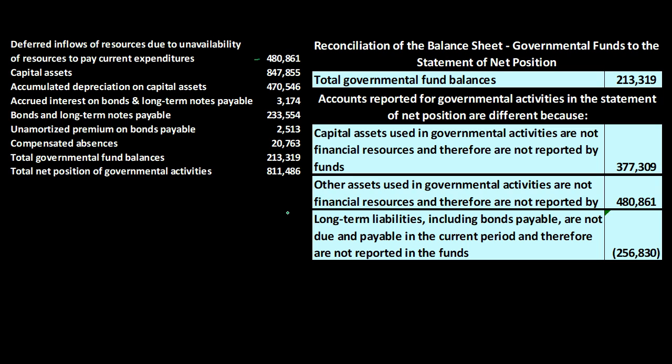Then we have: long-term liabilities including bonds payable are not due and payable in the current period and therefore are not reported in the funds. This includes bonds and long-term notes payable, the related premium on bonds payable, and compensated absences. These appear under normal accrual accounting at the government-wide level but not under modified accrual at the fund level, where they may be recorded as a flow-type temporary account similar to an income statement account.